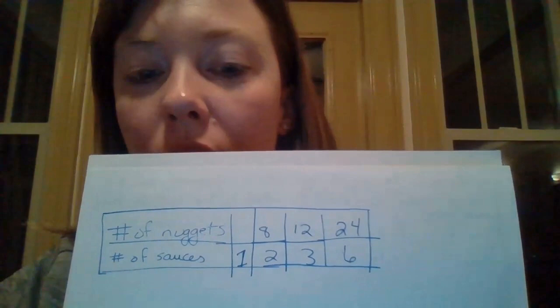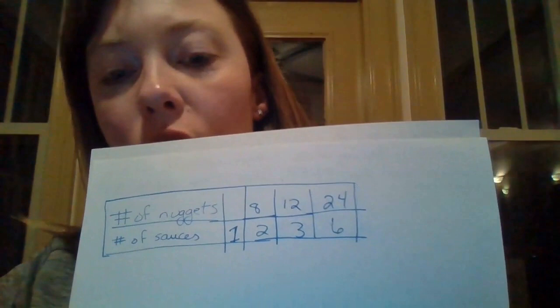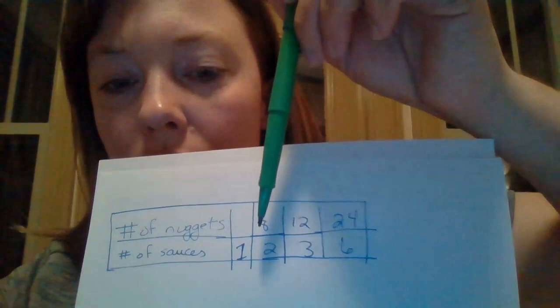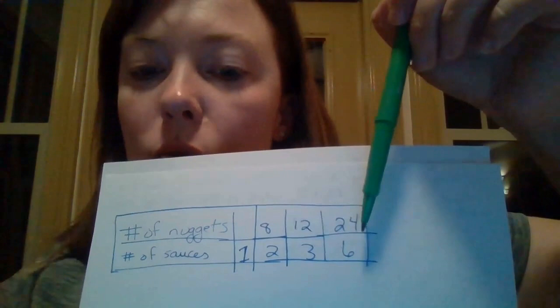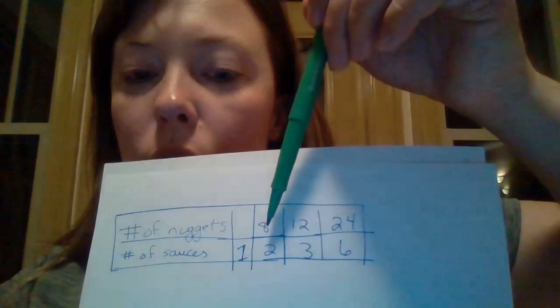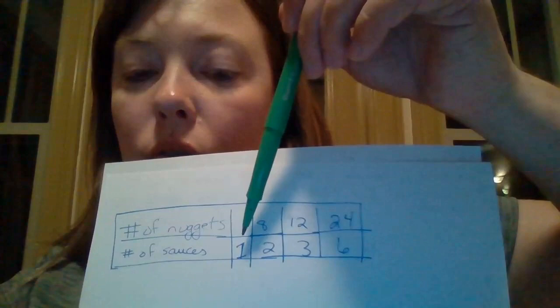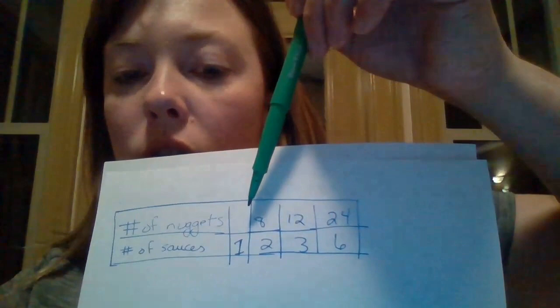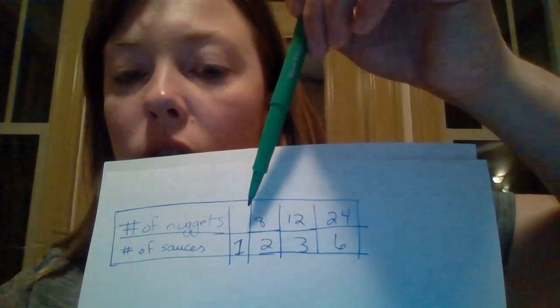With ratio tables, you can go a couple of different ways: 8 divided by what gives you 2, 12 divided by what gives you 3, 24 divided by what gives you 6 — or 6 times what gives you 24, 3 times what gives you 12, 2 times what gives you 8. We know 2 times 4 is 8, 3 times 4 is 12, 6 times 4 is 24, so 1 times 4 is 4. For every packet of sauce, you get 4 nuggets. That's your final answer — just one more way to show unit rate, depending on how you're most comfortable.